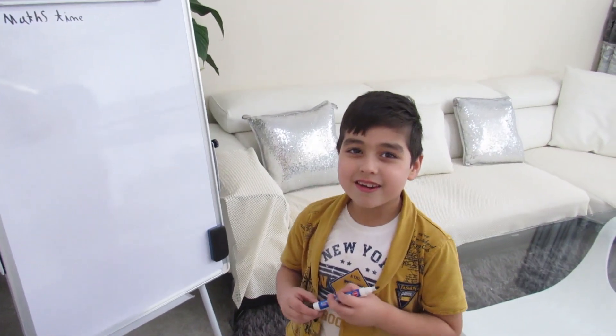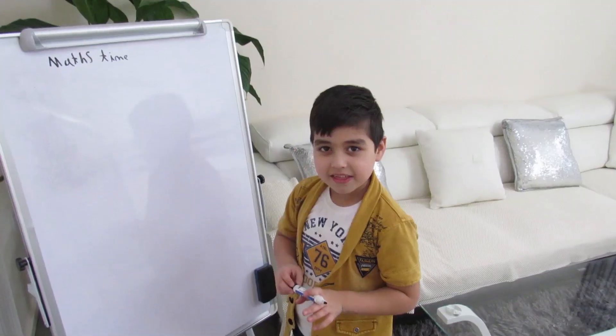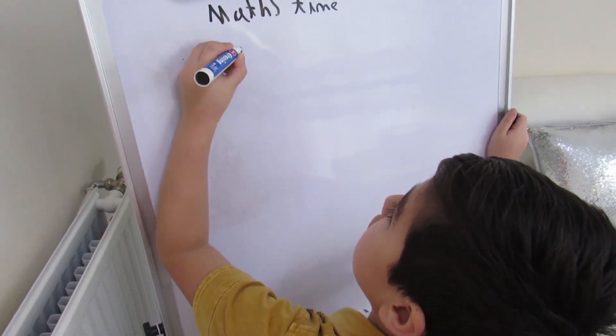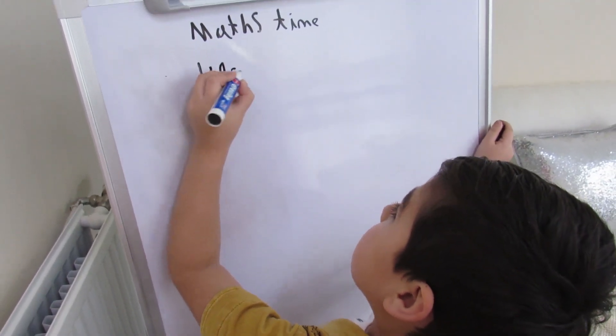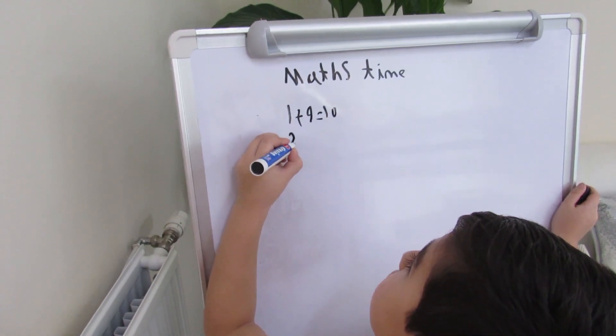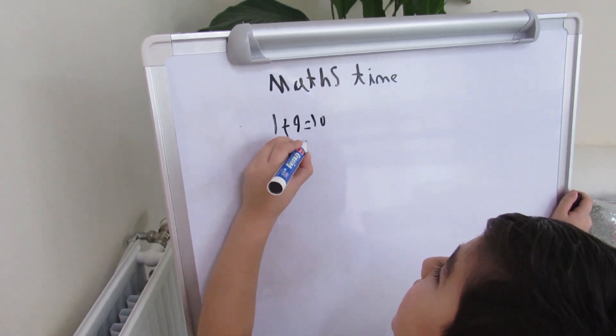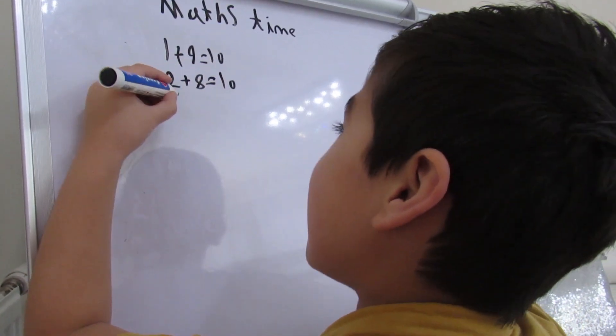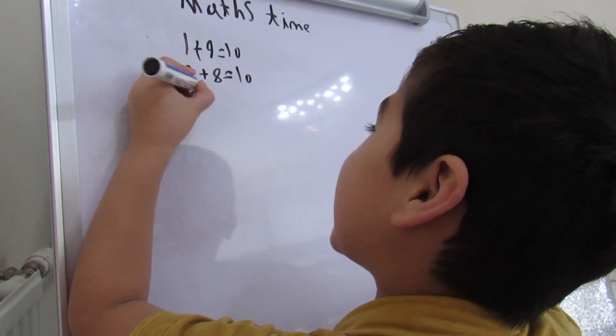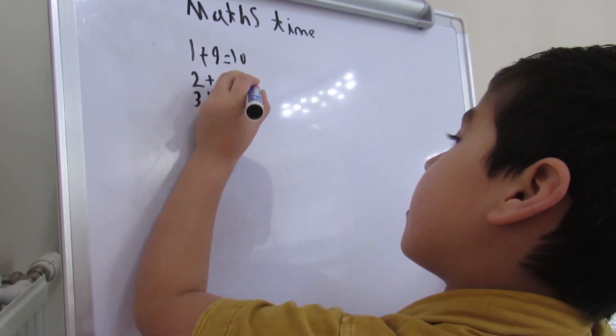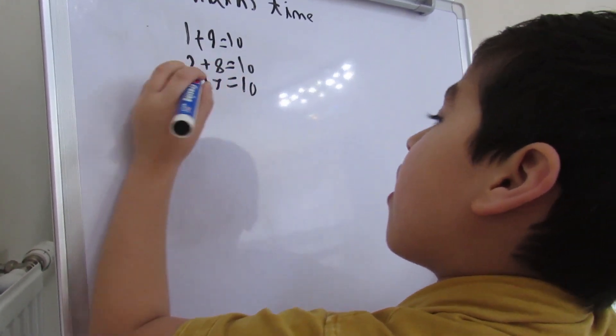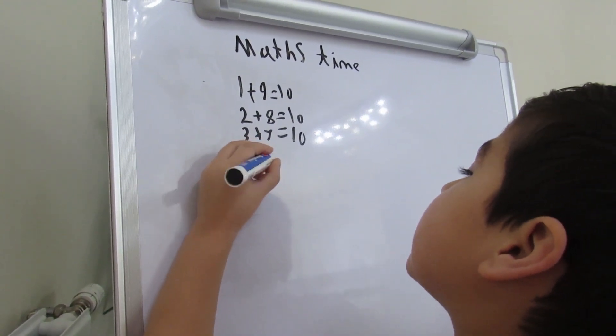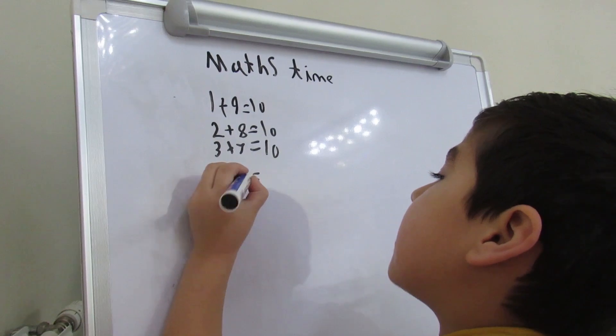Now we're going to do number bonds up to ten. The first one is one plus nine equals ten. The second one is two plus eight equals ten. The third one is three plus seven equals ten. The fourth one is four plus six equals ten.